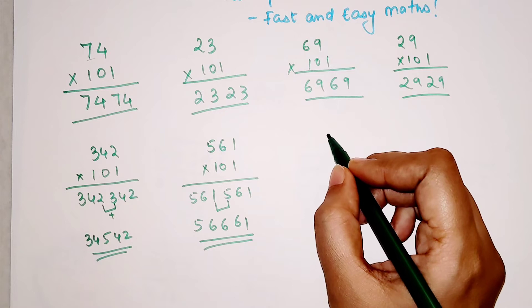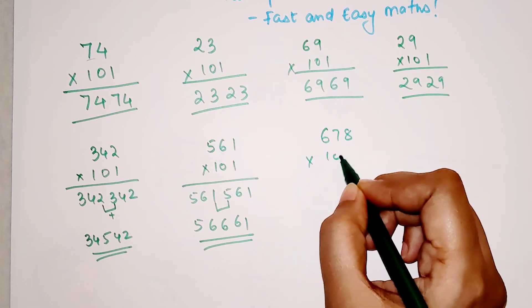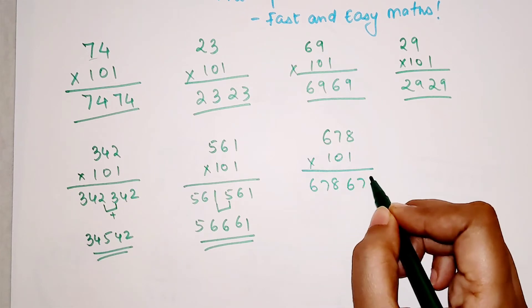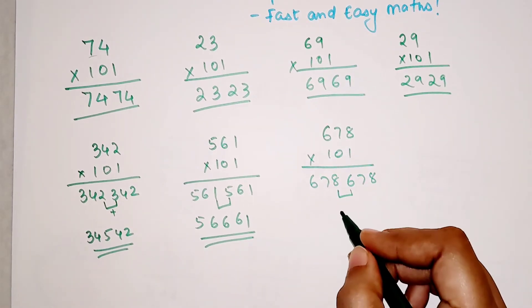Let's take for example 678 into 101. Here what happens is you get 678, 678. When you add these 2 what you get is 14.